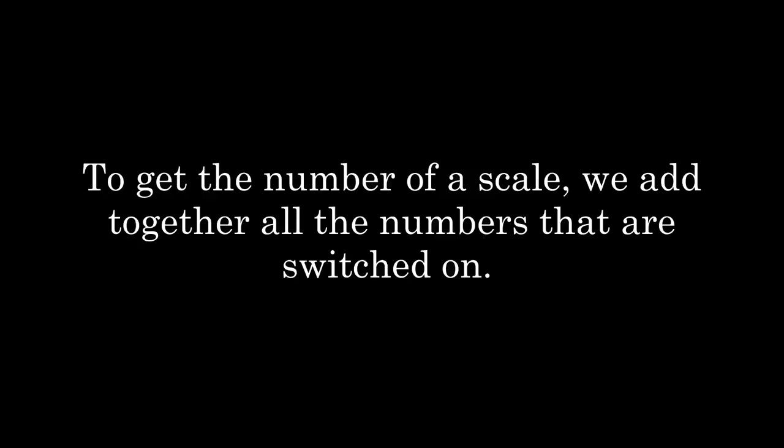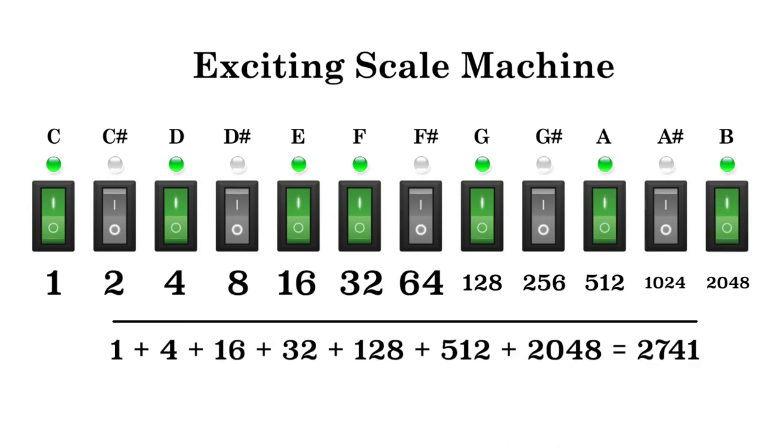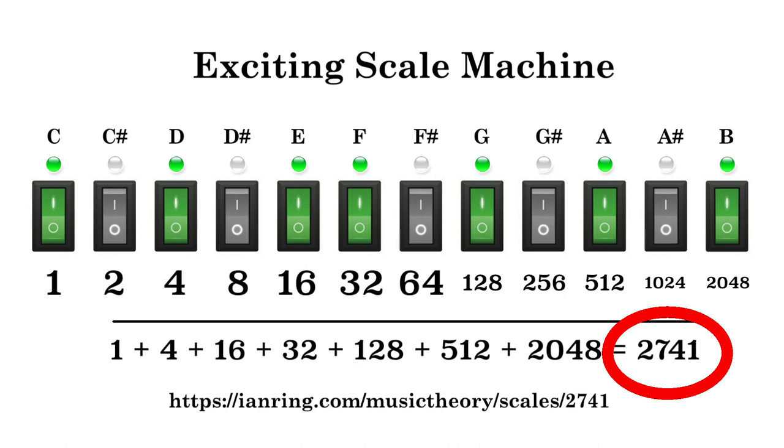To get the number of a scale, we add together all the numbers that are switched on. Here is the major scale again. All those powers of 2 add up to 2741. So, the major scale is numbered as scale 2741. If you go to ianring.com slash music theory slash scales slash 2741, you will see all the scale detail about the major scale.